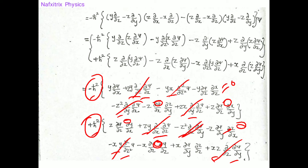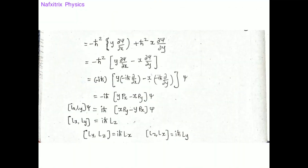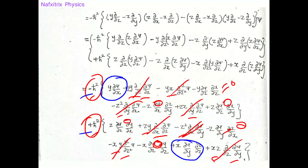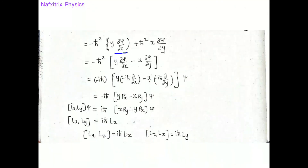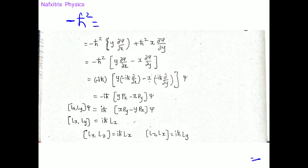Only two terms remain: y·(∂ψ/∂x) and x·(∂ψ/∂y), because ∂z/∂z = 1. From the first term we have -ℏ²·y·(∂/∂x) and from the second +ℏ²·x·(∂/∂y). Taking -ℏ² as common, the signs adjust accordingly.